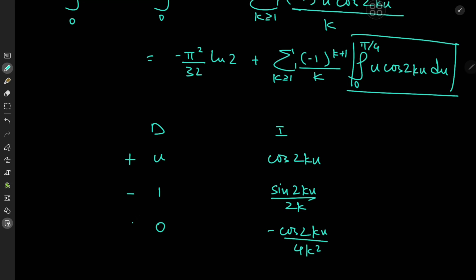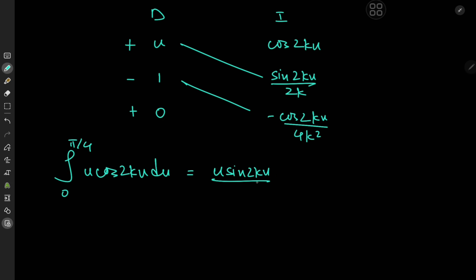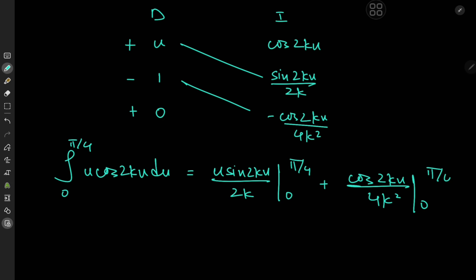With alternating plus and minus signs from integration by parts, the integral from 0 to π/4 of u·cos(2ku) du equals [u·sin(2ku)/(2k)] from 0 to π/4, plus [cos(2ku)/(4k²)] from 0 to π/4.